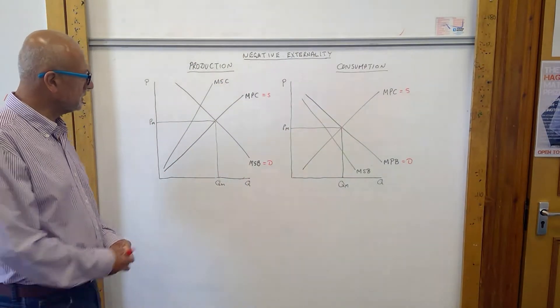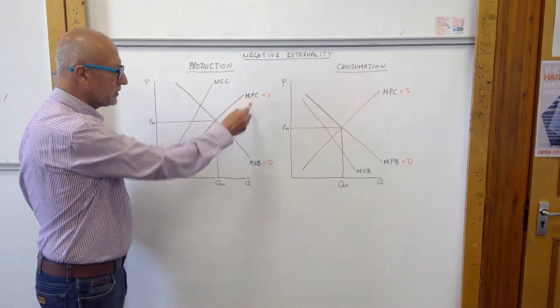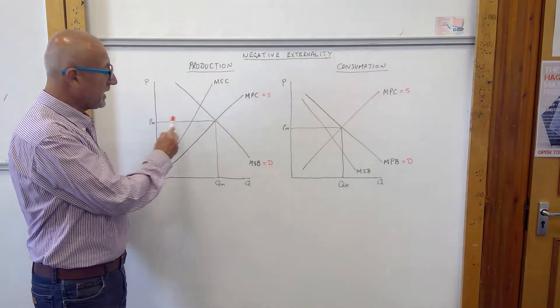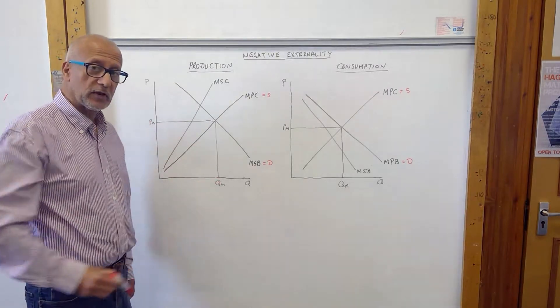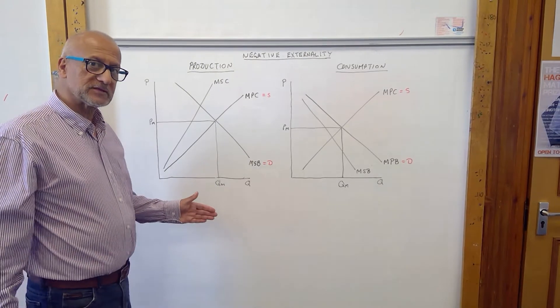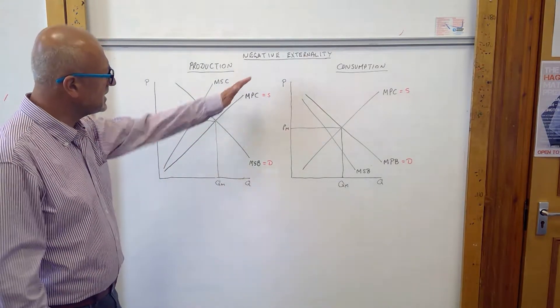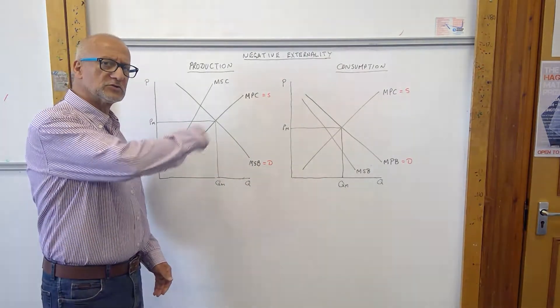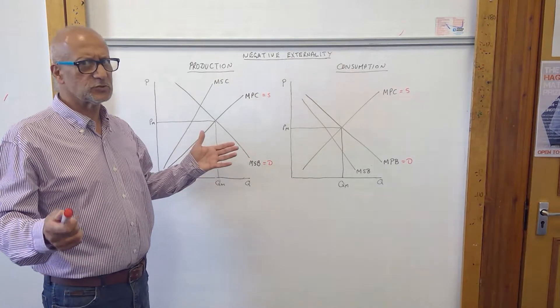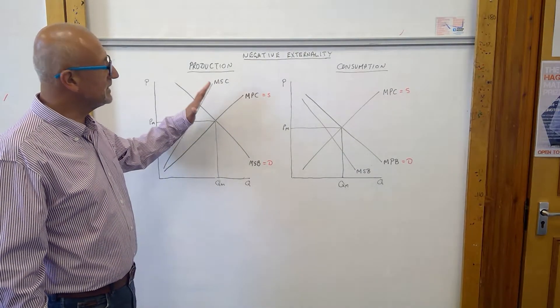Let's look at the production one first. In the production externality diagram the marginal private cost and marginal social benefit represent supply and demand. So we have an equilibrium price and quantity produced as decided by the market. However society says, hang on a sec, you may be producing all these cars but look at all the pollution you're creating. Who's paying for that? There's an extra cost to that. Therefore the societal cost is greater.